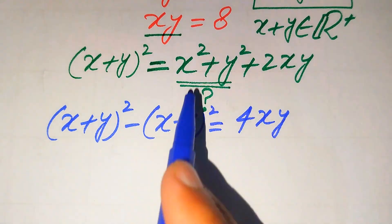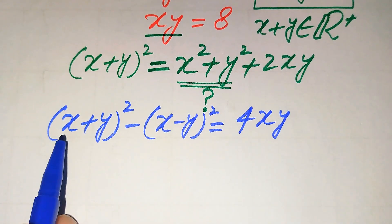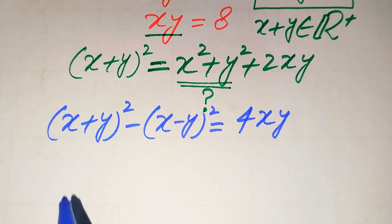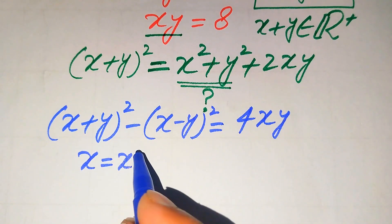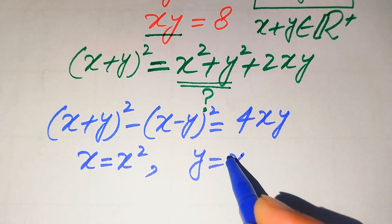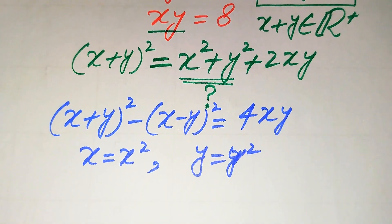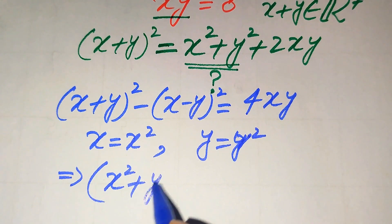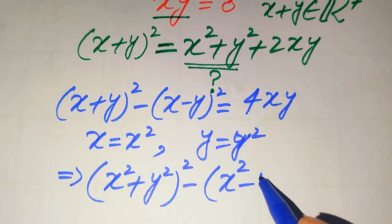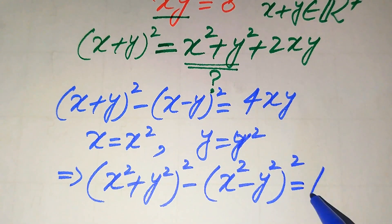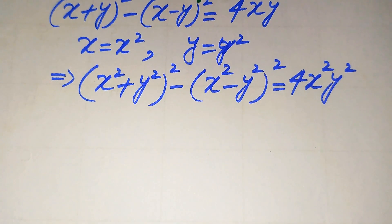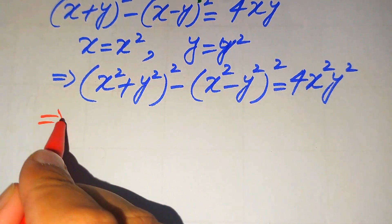We know this formula, but we need x² + y², so we replace x with x² and y with y². In other words, we take x = x² and y = y², and substitute into the formula. The equation then becomes: (x² + y²)² - (x² - y²)² = 4·x²·y², which we can use to find x² + y².